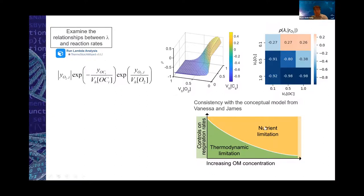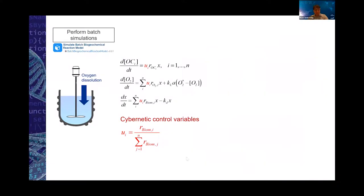This analysis can be connected to the conceptual model that Vanessa and James talked about in the morning. You can see that as carbon concentration increases — meaning carbon is less limited — in the direction where carbon is limited, thermodynamic limitation is a key control parameter that drives biogeochemical reaction rates. This is interesting because when I talk to field scientists and collaborators, I often find we are talking about the same context and reaching agreement based on our analysis and their experimental observations.